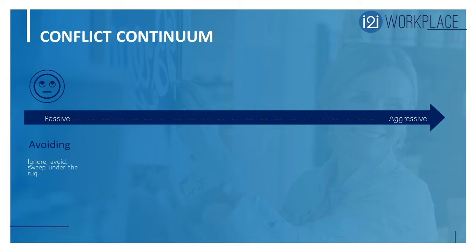Examples of avoiding behaviors are ignoring, avoiding, and sweeping the problem under the rug. Of course, the problem just festers and gets worse if unresolved. However, short-term it is sometimes good to walk away from a problem and avoid it, hoping that you can come together at some point and resolve the issue appropriately.